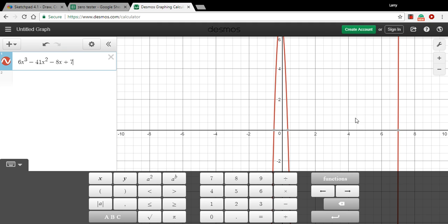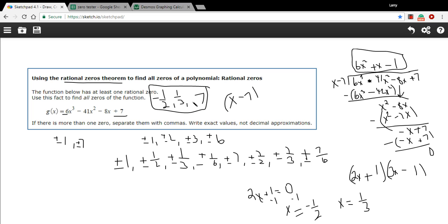And then wherever this thing crosses the X axis, those are going to be the zeros. You can see we've got one at 7. We've got one at 1 third. And we've got one at negative 1 half. So it looks like we did our work correctly here. So that is how to find the zeros of a function starting with the rational zeros theorem, testing one, maybe using a spreadsheet to test it until we find one, and then using polynomial division and then factoring the quadratic that's left over.